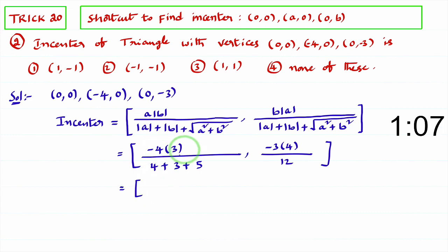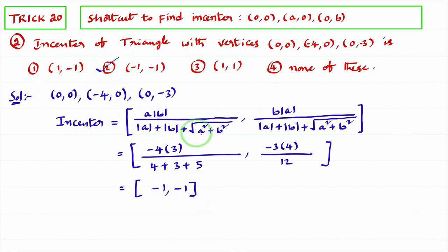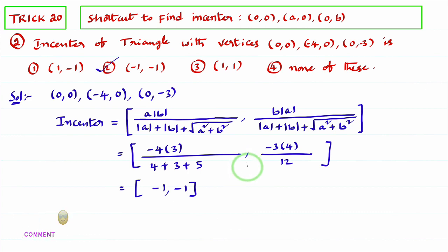So we get -12/12 = -1 for the first coordinate, and -12/12 = -1 for the second. The incenter of the triangle is (-1, -1). This is a very easy formula to memorize and a time-saving result when the given vertices are of the form (0,0), (a,0), (0,b).